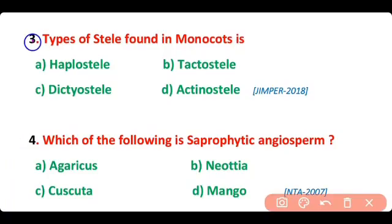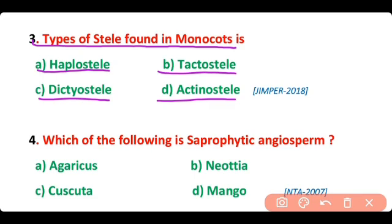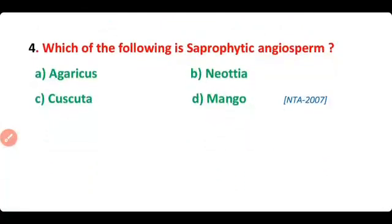Question 3. The type of stele found in monocots is: haplostele, atactostele, dictyostele, or actinostele? The correct answer is option B. Atactostele is the type of stele that is found in monocot plants.